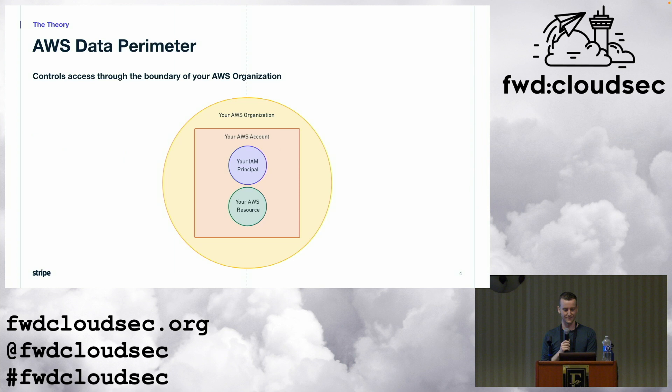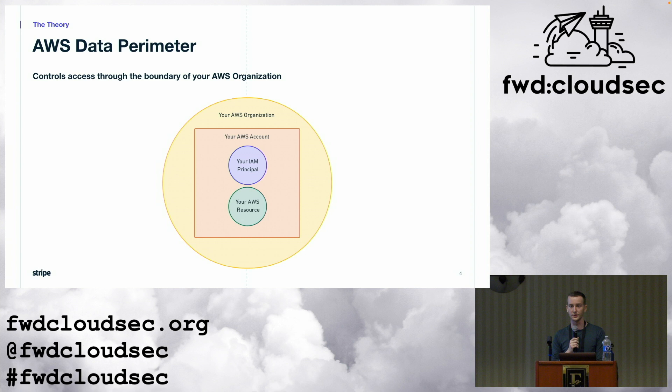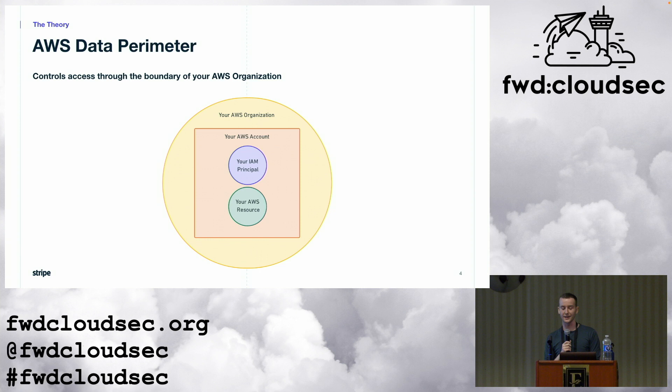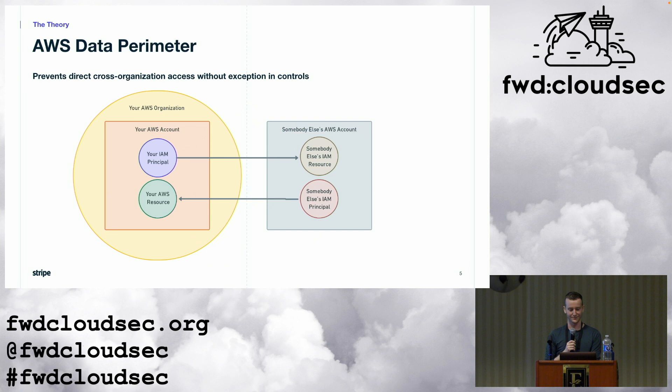Let's start with the theory. The perimeter is a set of guardrails to control access to the boundary of your AWS organization. We'll be updating all sorts of IAM policies so that access to the perimeter is denied by default, and so that granting access requires a high level of approval. The goal is to establish a zone of distrust outside of your organization. It's not that you should necessarily trust what's within your organization, but that you should be very skeptical of principals and resources outside of it. The intuition behind the value of the perimeter is that when things go wrong in the cloud, it's very often because some data was passed through this organizational boundary.